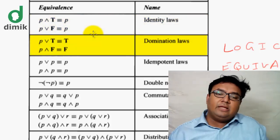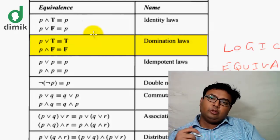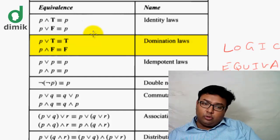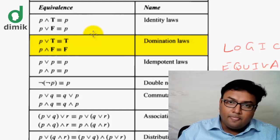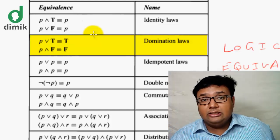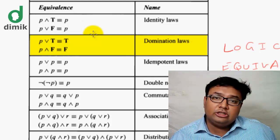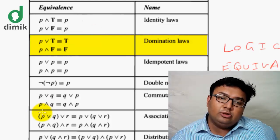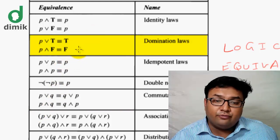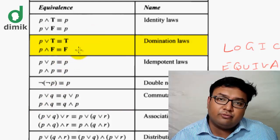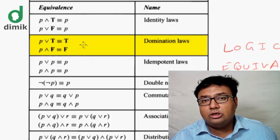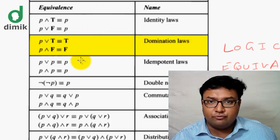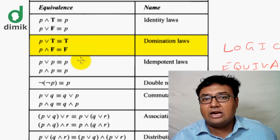Next is the Domination Law. P OR true is always true, and P AND false is always false. This is the domination law — the constant T or F dominates the expression regardless of the variable's value.